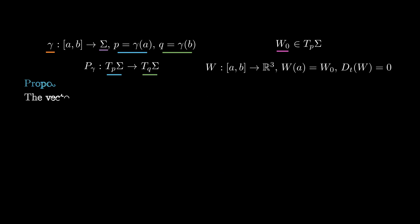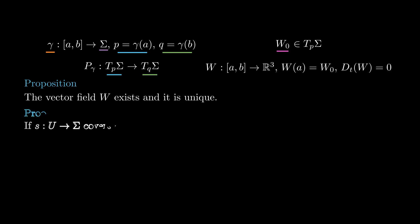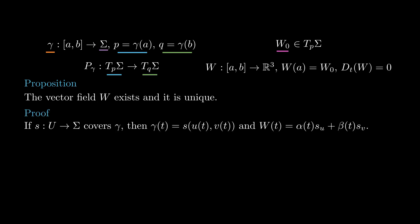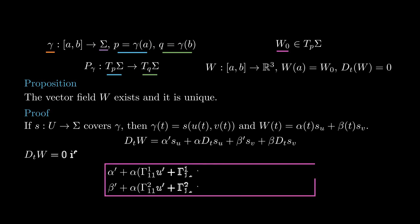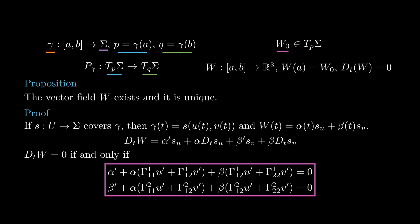It turns out such a vector field exists and is unique. To see this, assume the curve gamma is covered by a coordinate chart. This allows us to write w as a linear combination of s_u and s_v. Then the condition of w having zero covariant derivative along gamma becomes a linear first-order ordinary differential equation with smooth coefficients. By the classic theory of such equations, the desired vector field w exists and is unique.